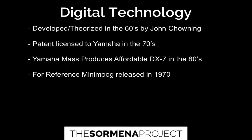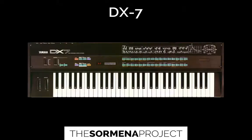Chowning took out a patent and licensed it to Yamaha in the 70s. It was about 10 years before the technology got there and became affordable enough for Yamaha to mass produce the now famous — or for some, infamous — DX7. Just for reference, the Mini Moog was released in 1970. I'd argue that you have a bigger difference between the Buchla modular and the Moog modular than you do between the Mini Moog and the DX7. These things were all being developed at the same time.